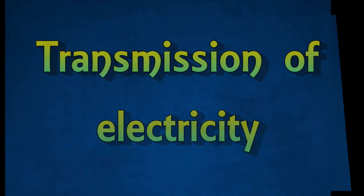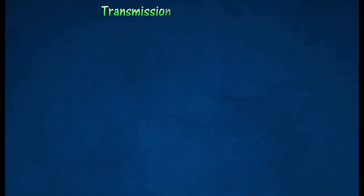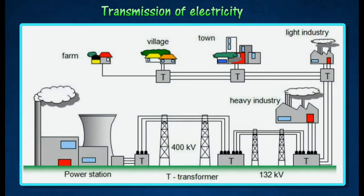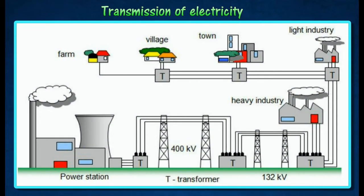Transmission of Electricity. Electrical energy is transmitted from the power plant to the consumer using long transmission cables. The heating effect due to resistance of the cables causes loss of electrical energy as heat energy.